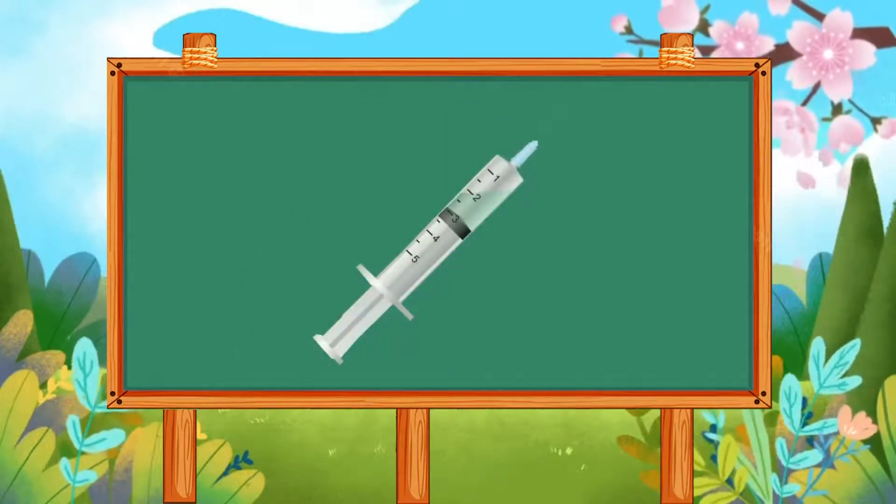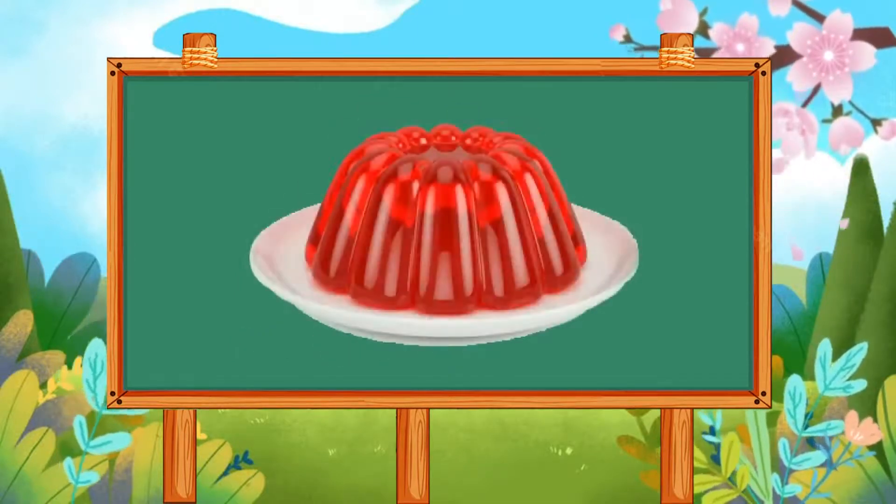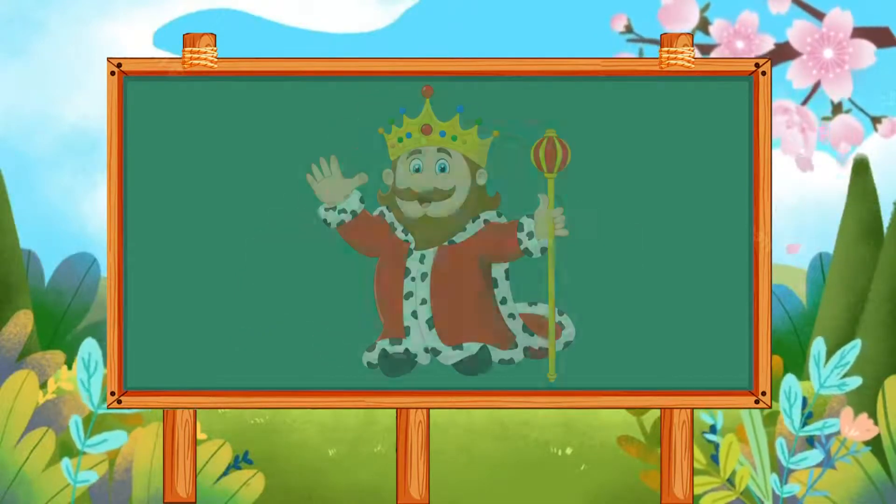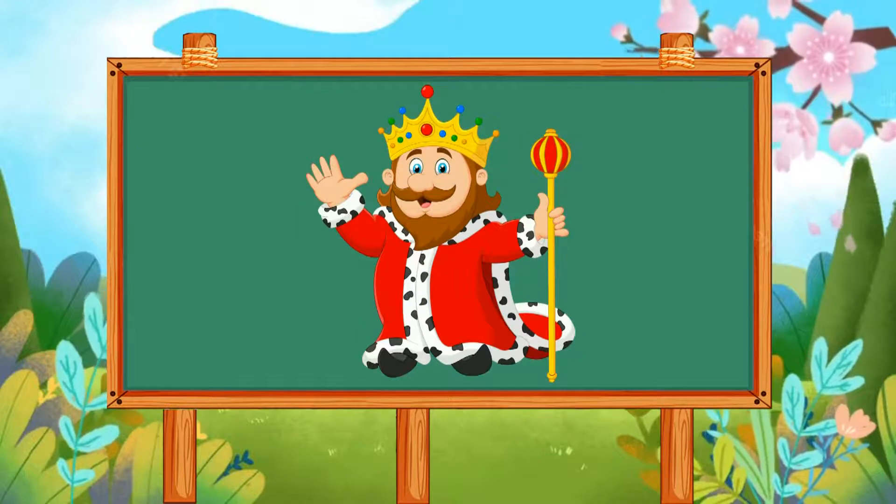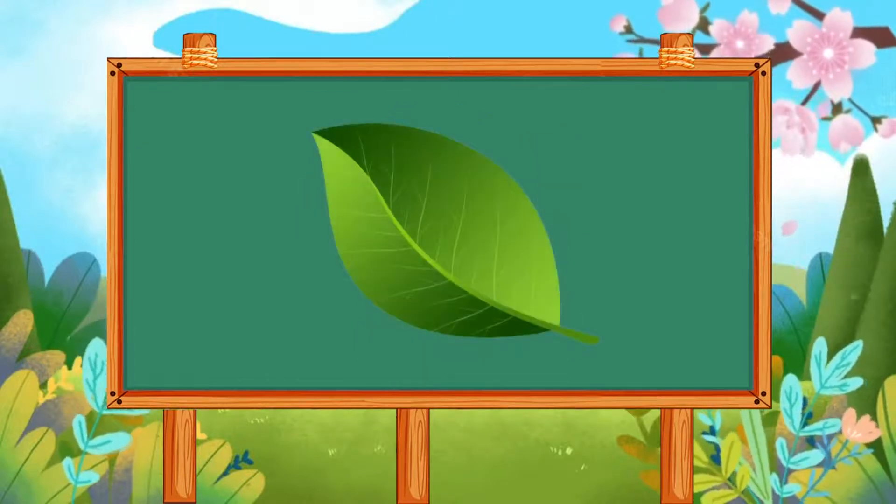I is for injection. J is for jelly. K is for king. L is for leaf.